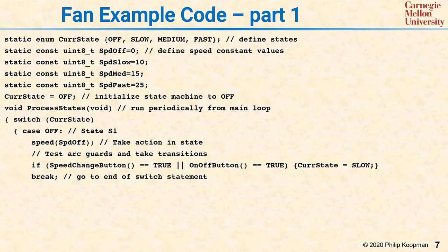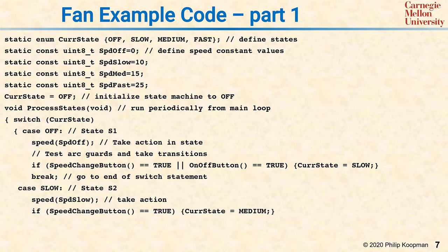The net result is, if that arc is true, then the state will change for the next time the code runs. The break is the end of handling this particular state, and you're done until the next time the processStates function is called. Now we march down all the states and do pretty much the same thing. For the state slow, which is S2, the side effect is speed slow. So you run the side effect. And in this case, there are two output arcs, so there's two if statements. The first if statement is if the speed button is true, then set the current state to medium. The second if statement is if the on-off button is true, then set the current state to off. The pattern here is that first you do the side effect, and then each outgoing arrow has an if statement that changes the state if the guard is true.